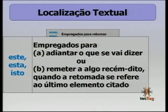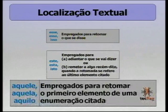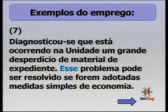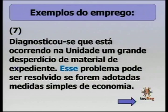Para complementar: numa enumeração, o elemento mais próximo do ponto final usa 'este/esta/isto' e o mais distante usa 'aquele/aquela/aquilo'. Exemplo: 'Diagnosticou-se que está ocorrendo na unidade um grande desperdício de material de expediente. Esse problema pode ser resolvido se forem adotadas medidas simples de economia.' — retomei o elemento já dito usando 'esse'.